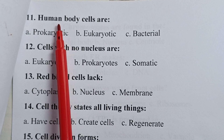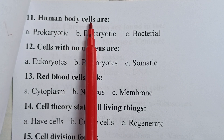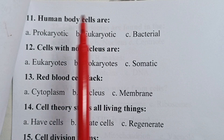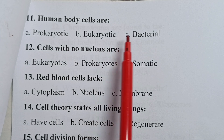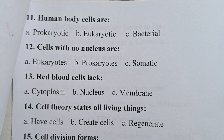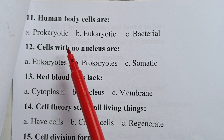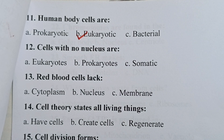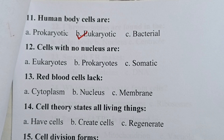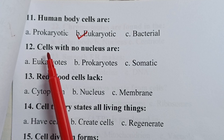Question eleven: human body cells are — is it prokaryotic, eukaryotic, or bacterial? The correct answer is eukaryotic. Human body cells are eukaryotic cells.